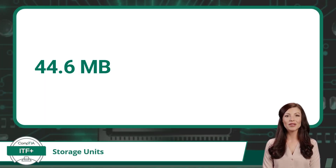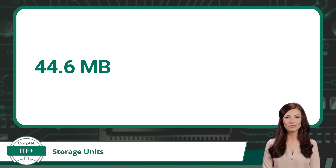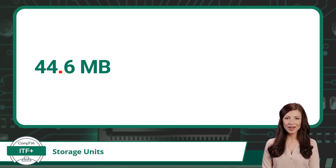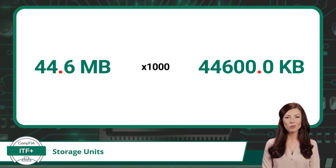Let's do a measurement conversion. We'll start with 44.6 megabytes and convert to kilobytes and then gigabytes. If you don't trust your math skills, the most important part is to follow the decimal point, which I will highlight in red. Since the difference between each storage unit size is a factor of 1000, the decimal point moves three place values to the right if going down one storage unit size. Converting 44.6 megabytes to kilobytes, we move the decimal three places to the right: 44.6 megabytes equals 44,600 kilobytes.